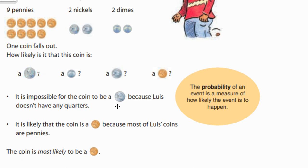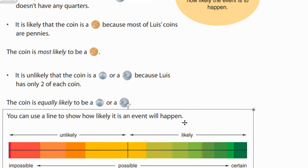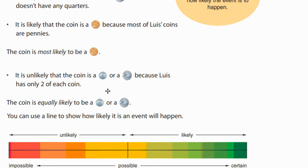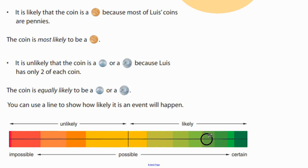The probability of an event is a measure of how likely the event is to happen. The coin is most likely to be a penny, and the nickel and the dime are not as likely, although they are a possibility. We can show these types of things on a line to show how likely an event is. The penny is fairly likely and possible, so it goes toward the likely end. The nickels and dimes are somewhere in the middle — possible, but less likely than the pennies.